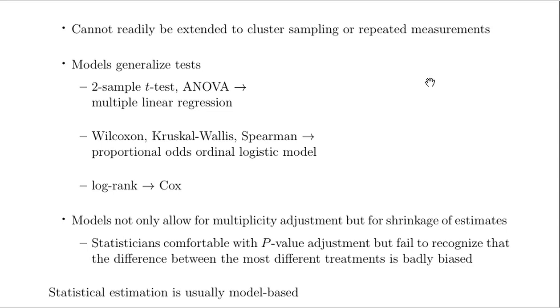Models generalize tests. The two-sample t-test, as well as ANOVA for comparing a number of groups, are just special cases of multiple linear regression. So you could argue that it's better to learn regression instead of learning a bunch of special cases. The Wilcoxon and Kruskal-Wallis and Spearman tests are thought of as special cases of the proportional odds ordinal logistic model. So if you use the proportional odds model, you don't really need these other tests as much, and you can do covariate adjustment, which those other tests do not allow. In the world of survival analysis or time-to-event analysis, the log rank test is just a special case of the Cox proportional hazards model.